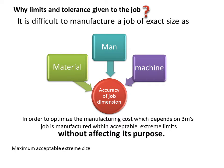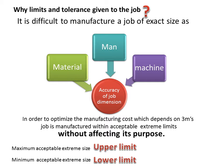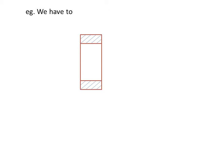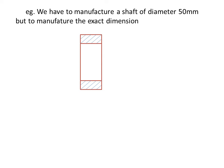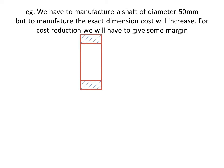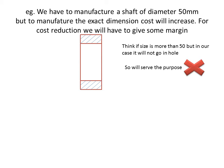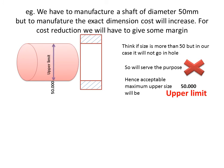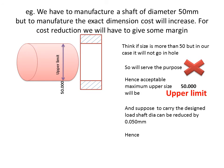The maximum acceptable extreme size is known as upper limit, and the minimum acceptable extreme size is known as lower limit. For example, we have to manufacture a shaft of diameter 50 mm. If the size is more than 50 mm, it will not fit in the hole, so the acceptable maximum upper size will be 50 mm — that is the upper limit. To carry the design load, shaft diameter can be reduced by 0.050 mm, so the acceptable minimum lower size will be 49.950 mm — that is the lower limit.